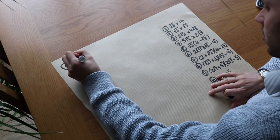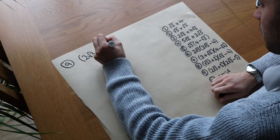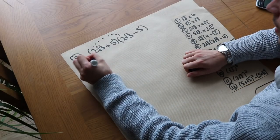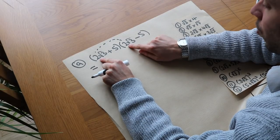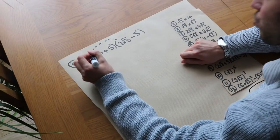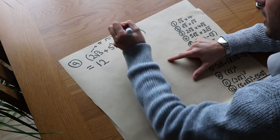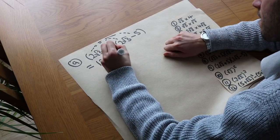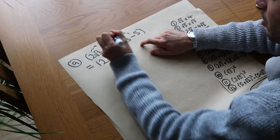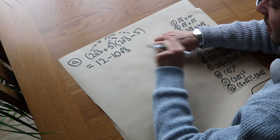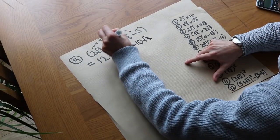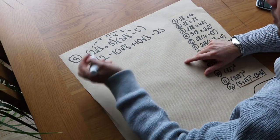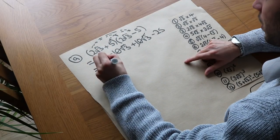Question 9: we've got (2 root 3 plus 5) times (2 root 3 minus 5). First, 2 root 3 times 2 root 3: the non-surd parts give 2 times 2 is 4, and root 3 times root 3 is 3, so 4 times 3 is 12. Then 2 root 3 times minus 5: 2 times 5 is 10, so minus 10 root 3. Then 5 times 2 root 3 gives plus 10 root 3. And 5 times minus 5 is minus 25. Collecting like terms: minus 10 root 3 plus 10 root 3 cancel, leaving 12 minus 25 which is minus 13.